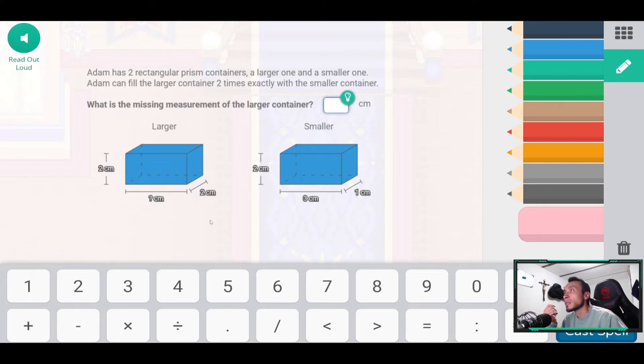It has rectangular prism container largo on the screen. The large volume and the small volume. 1. The large container is 2 times.